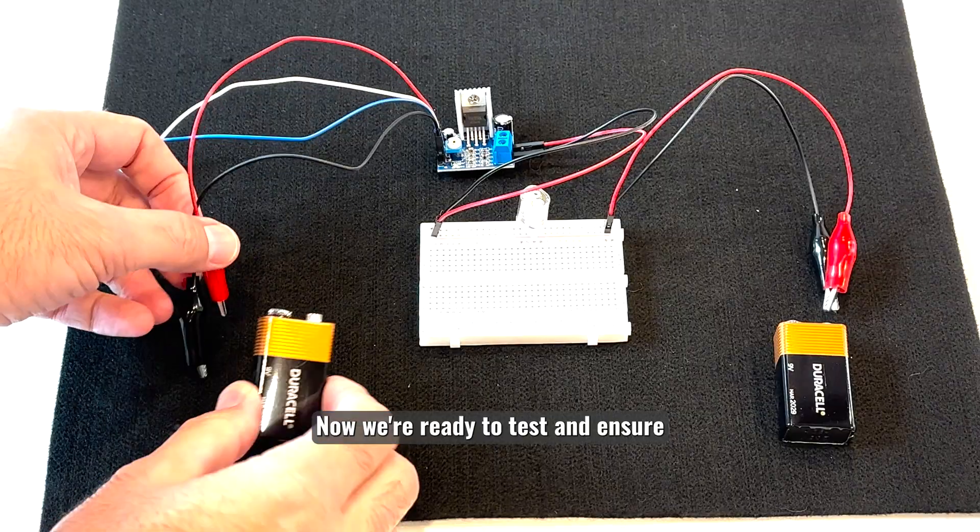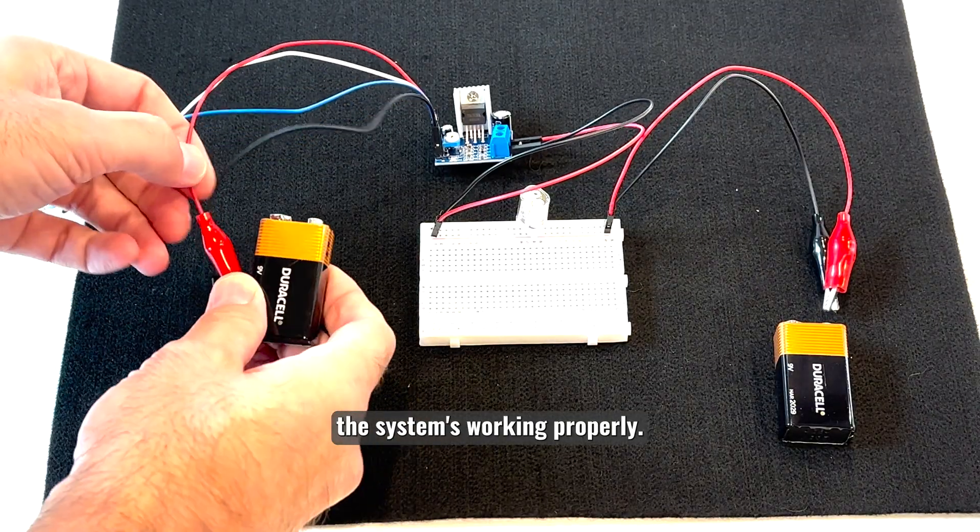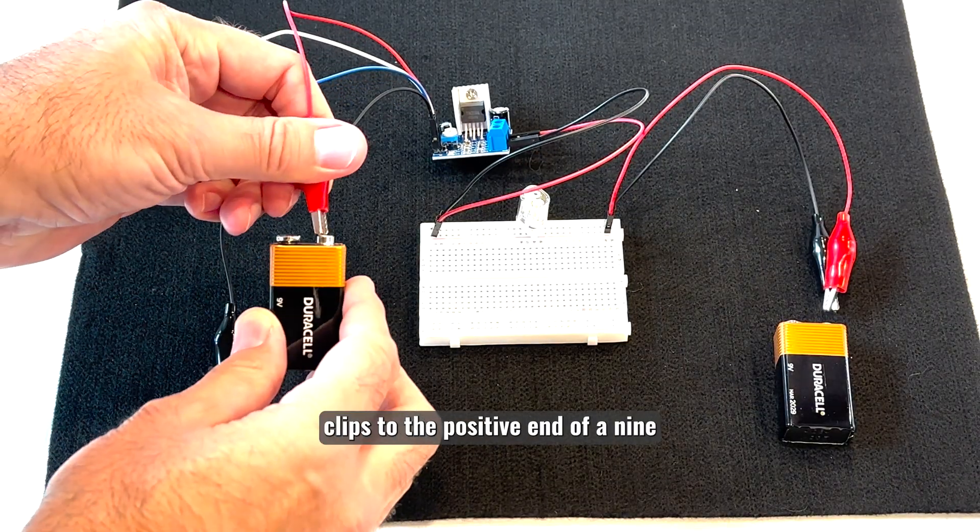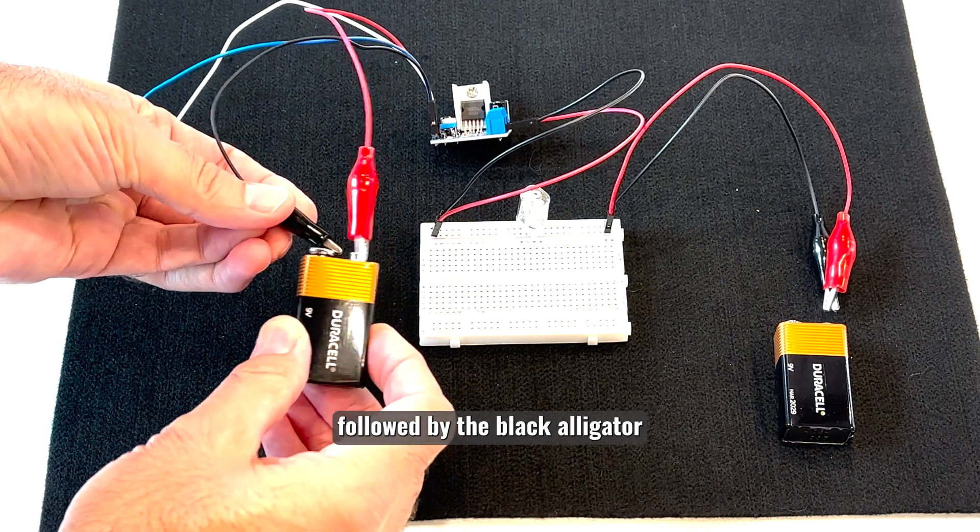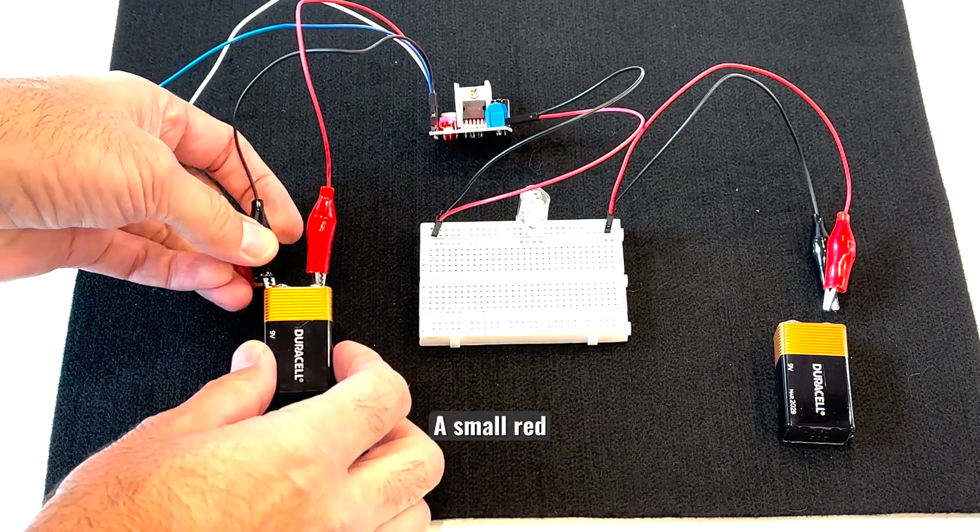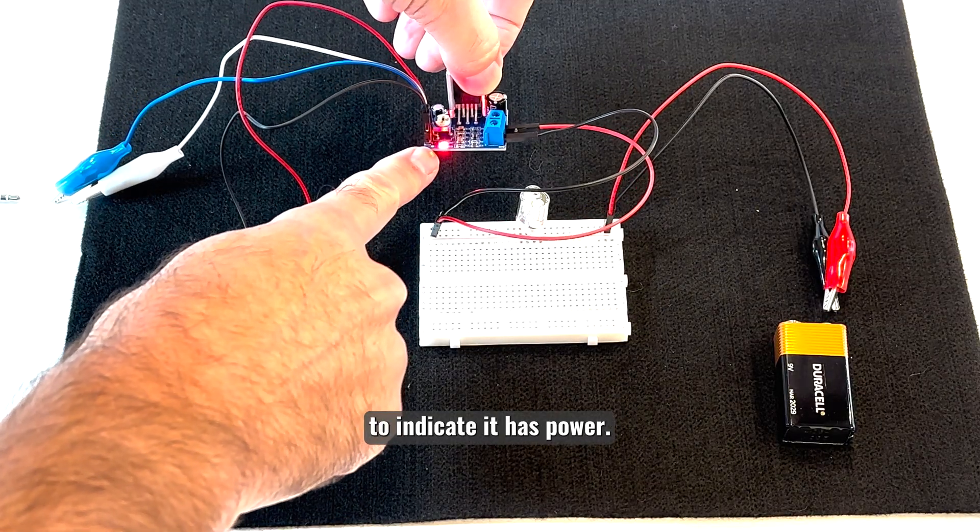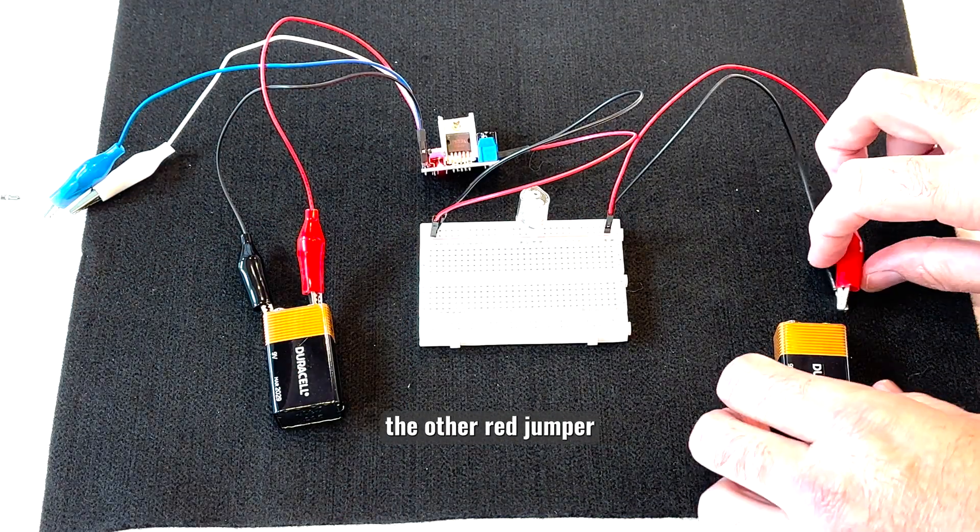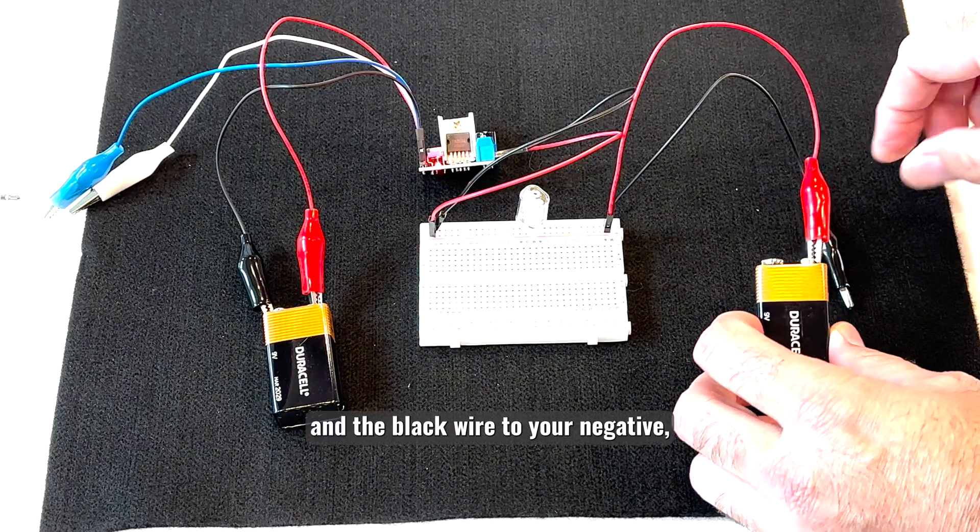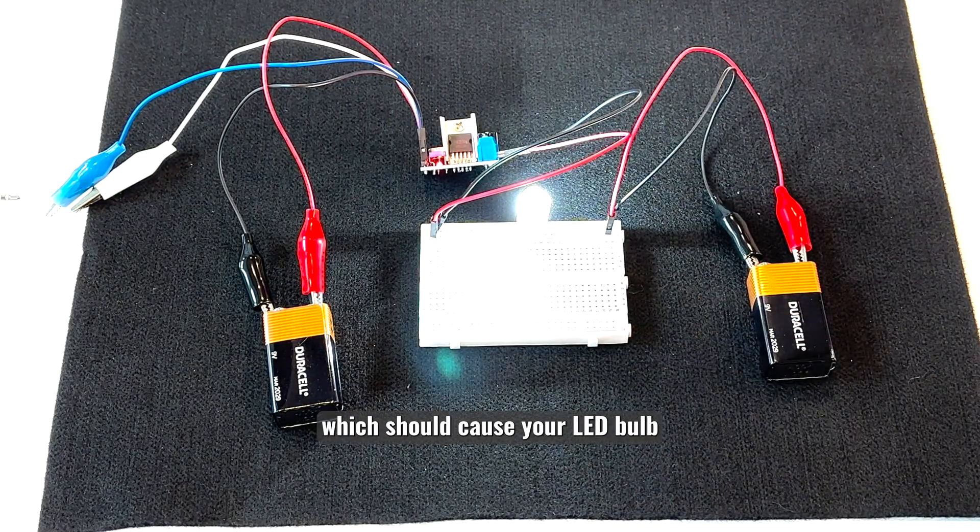Now we're ready to test and ensure the system is working properly. Connect the red alligator clips to the positive end of a 9V battery, followed by the black alligator clip to the negative end. A small red LED should illuminate on the audio amplifier to indicate it has power. On the other side of your breadboard, connect the other red jumper wire to your positive and the black wire to your negative, which should cause your LED bulb to light up.